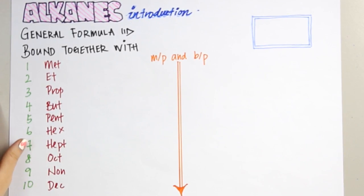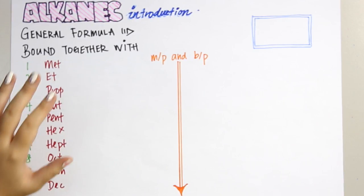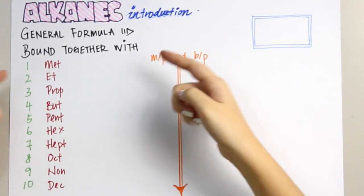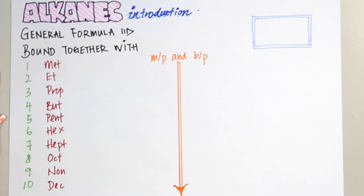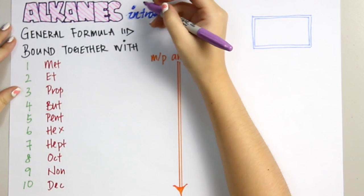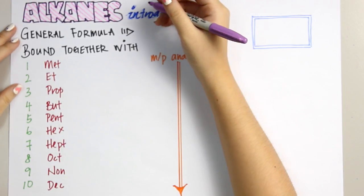To know what alkenes are: alkenes are saturated hydrocarbons where all carbon atoms are bound together with single covalent bonds. You have to know the general formula for alkenes. The general formula for alkenes is...